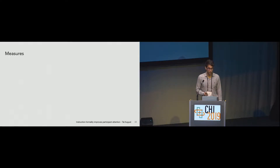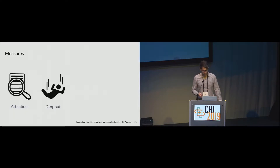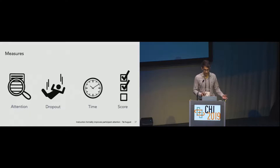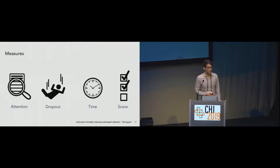We then measured participant engagement across four different measures: attention, which we measured as a binary variable based on whether participants clicked on the final word in the break screen after the practice round — a traditional instructional manipulation check, also called an attention check; dropout, measured as a binary variable based on whether participants completed the study; time to complete the study; and participant score out of 30. Although problem-solving ability naturally varies between individuals, measuring score could capture whether participants gave up on more difficult questions, providing a useful proxy for effort.